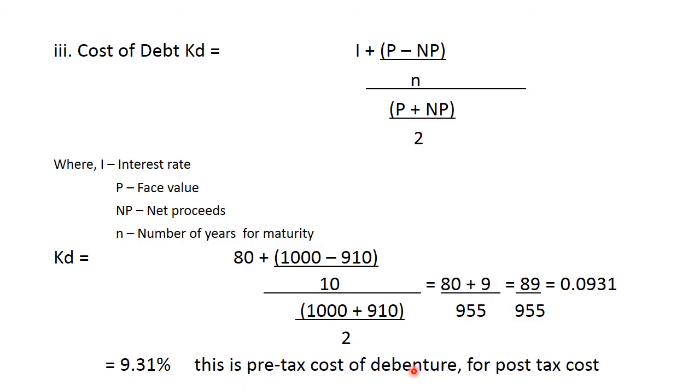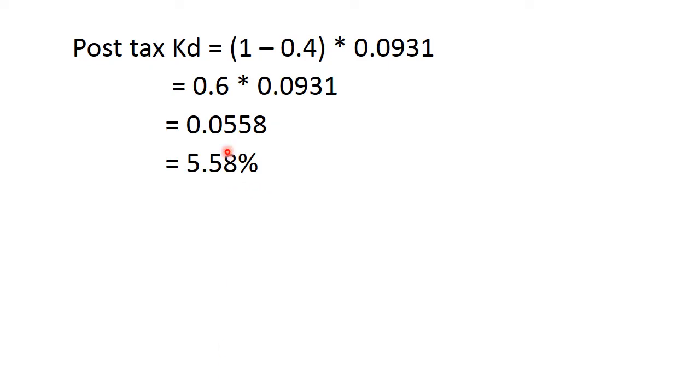This is pre-tax cost of debenture. For post-tax cost, this is pre-tax cost of debenture. Now, what they have asked us to calculate is the post-tax cost. So for deducting the tax element, what we do for post-tax cost of debt, we will have to multiply it by the tax rate. 1 minus tax rate that is 1 minus 0.4 multiplied by the cost of debt. We get it as 0.0558 that is 5.58%. This is the post-tax cost of debentures.